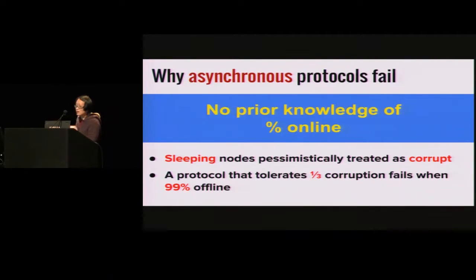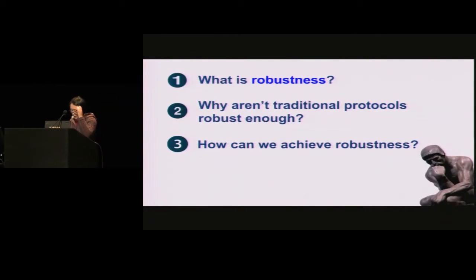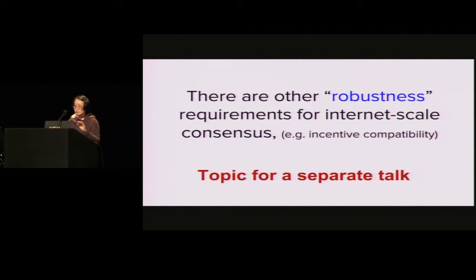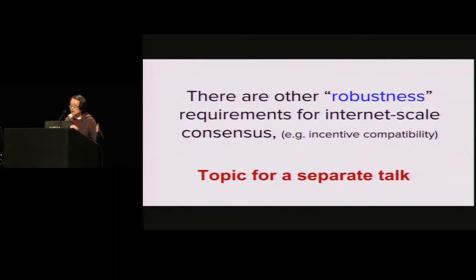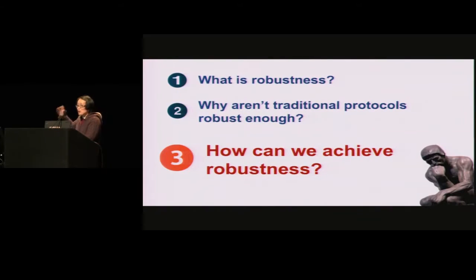The fundamental problem is that we cannot anticipate how many people are going to show up. So classical protocols fail in this model. Robustness can mean many other things — one particularly interesting aspect is incentive compatibility, which is very important in internet-scale deployment. That can be a topic for a separate talk; we have other works such as the fruit chain paper that addresses the incentive compatibility issue. For the purpose of this talk, we're going to focus on how to address the sleepiness issue and design provably secure protocols that give you robustness.